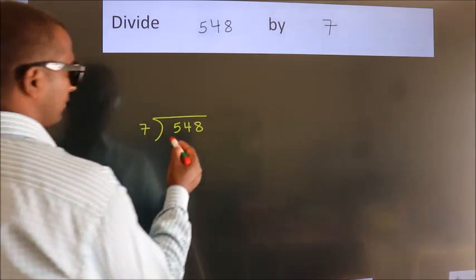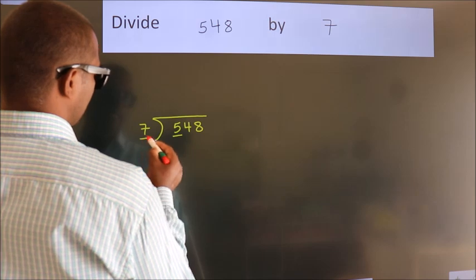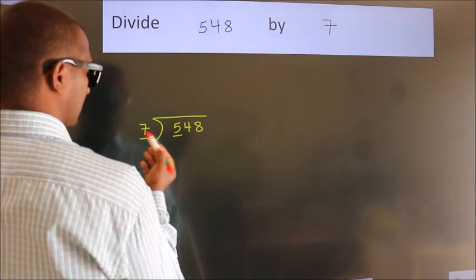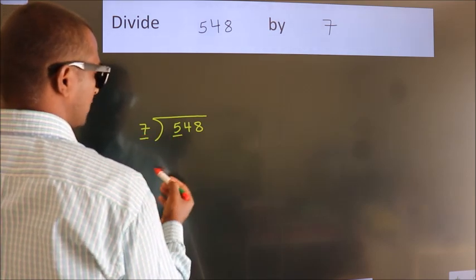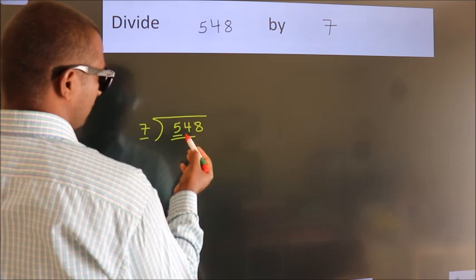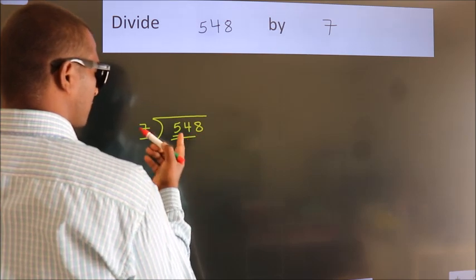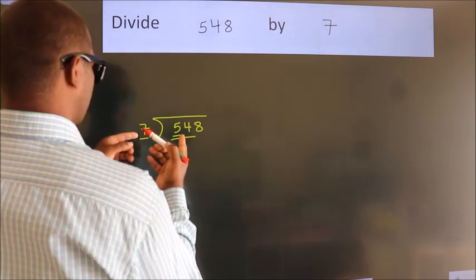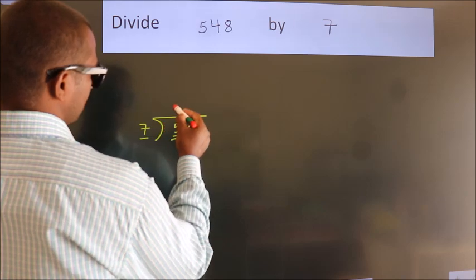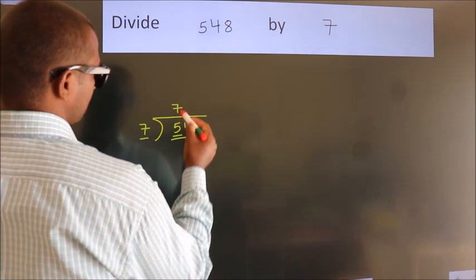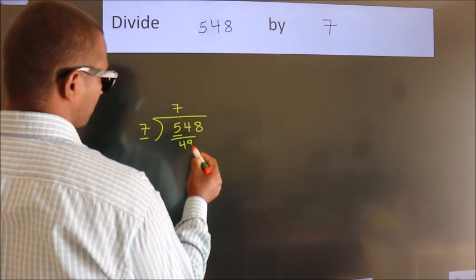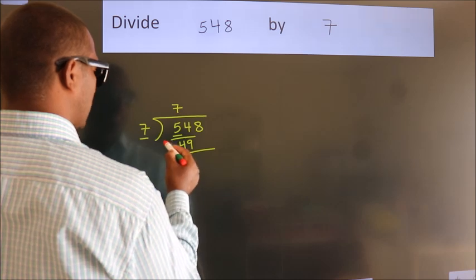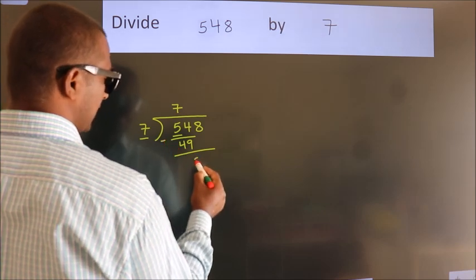Here we have 5, and here 7. 5 is smaller than 7, so we should take two numbers: 54. A number close to 54 in the 7 times table is 7×7=49. Now we subtract, and we get 5.